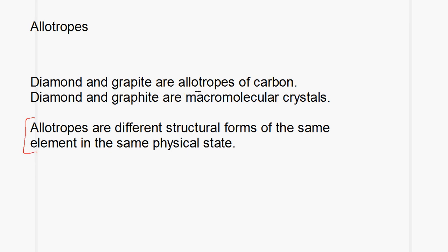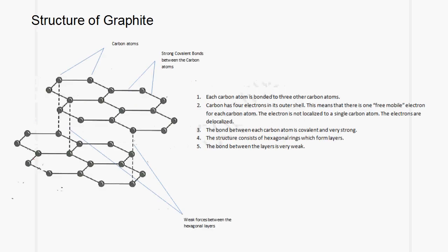Diamond and graphite are allotropes of carbon, and they are both macromolecular crystals. Now let us look at the structure of graphite. Each carbon atom is bonded to three other carbon atoms. Carbon has four electrons in its outer shell, which means that there is one free mobile electron for each carbon atom. The electron is not localized to a single carbon atom — the electrons are delocalized, meaning that they are free to move throughout the structure.